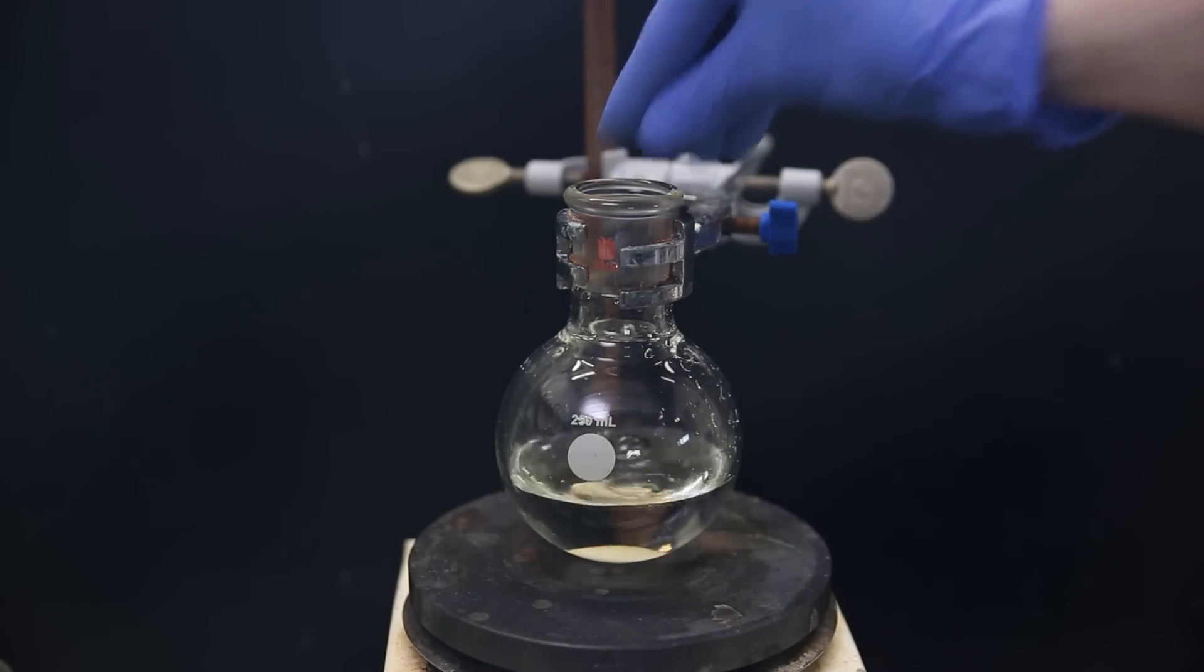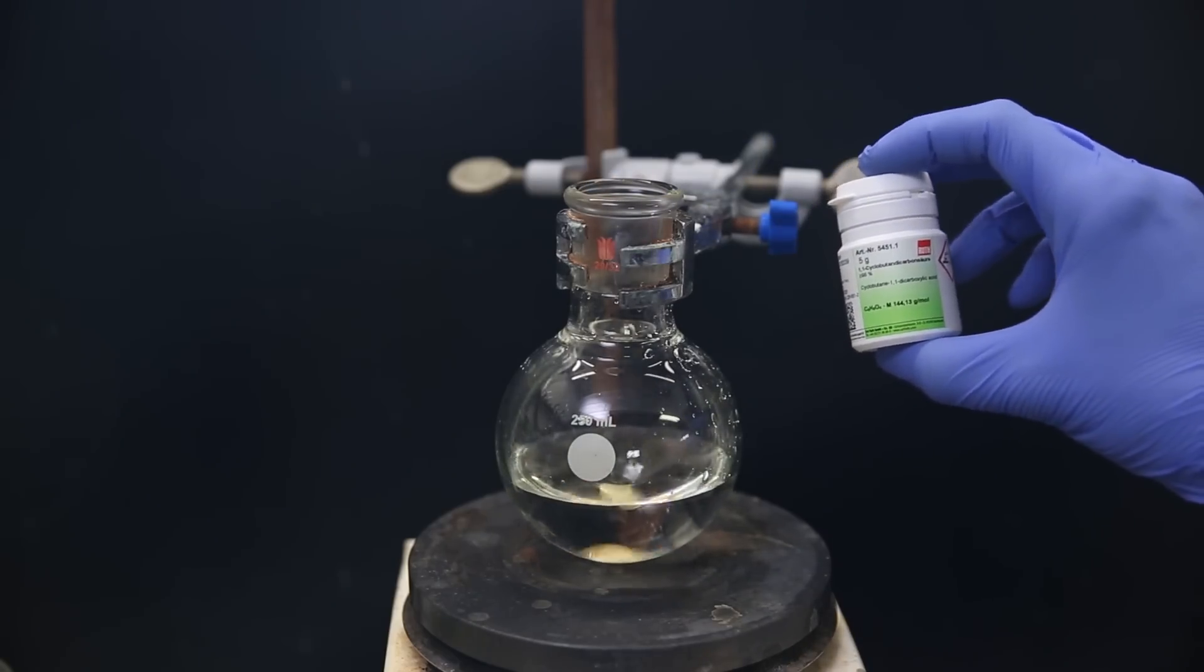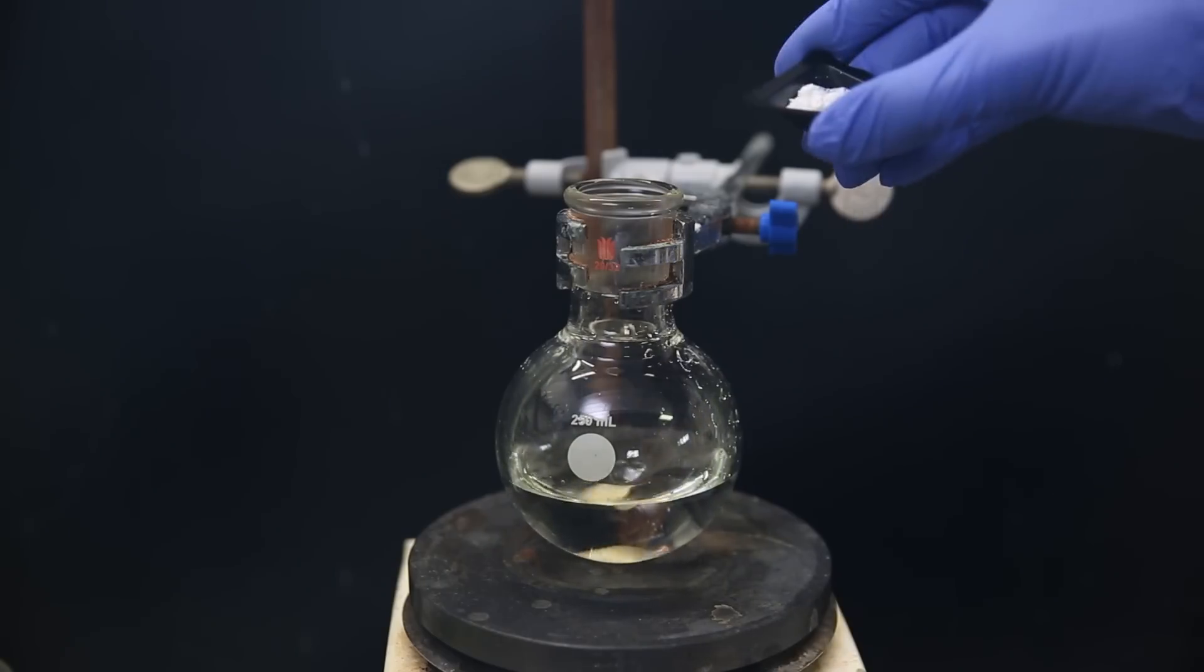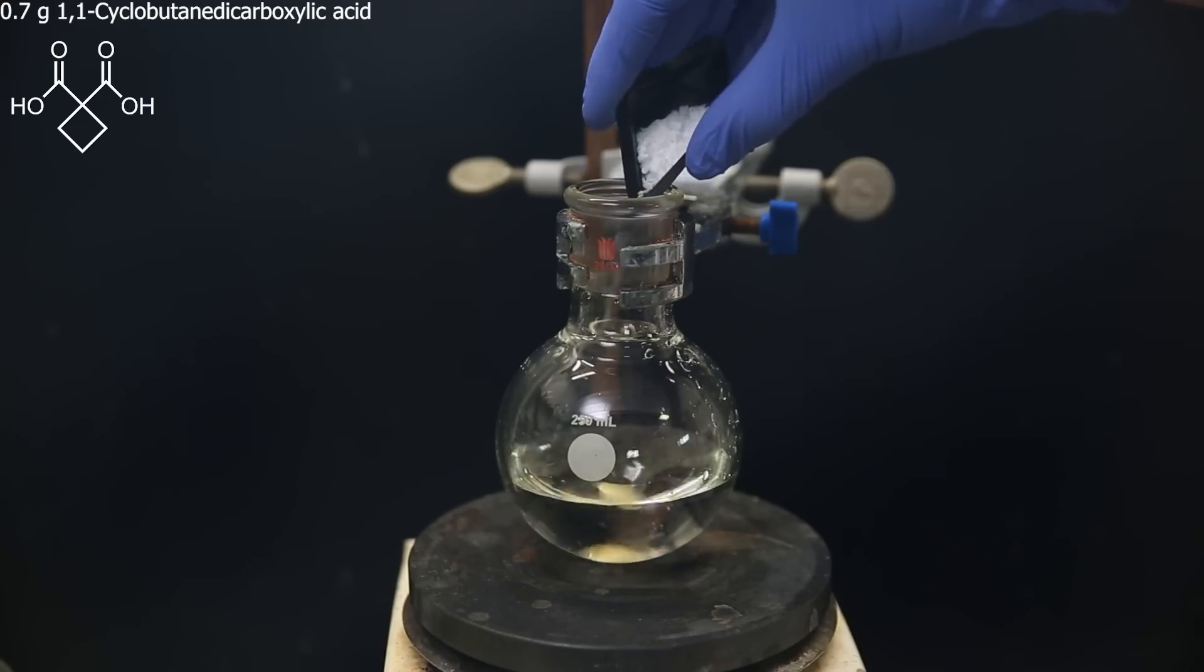So I add a stir bar, and as the final reagent, I will need 1,1-cyclobutanedicarboxylic acid. I did consider making it, but it seemed quite annoying because I couldn't find coherent literature, and it isn't too expensive to buy. So of that, I add 0.7 grams to the flask and wait for it to dissolve.